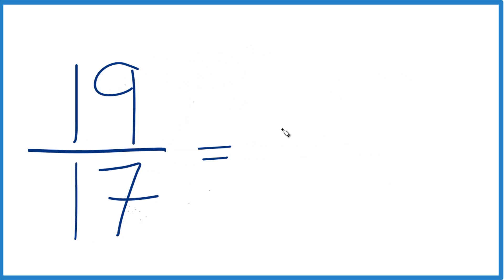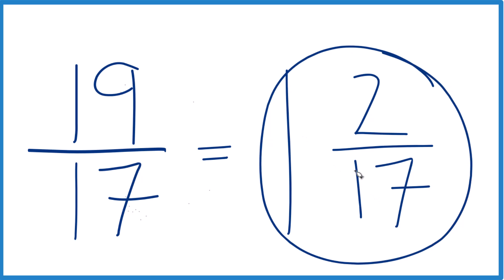17 goes into 19 one time. 1 times 17 is 17, and we have 2 left over. Then we bring that 17 across here, and 19/17 equals the mixed number 1 and 2/17. You could check that.